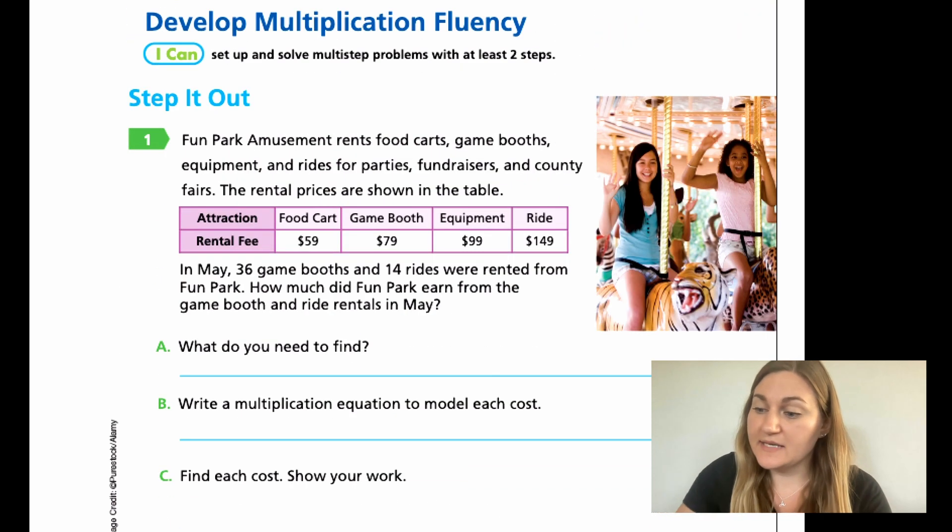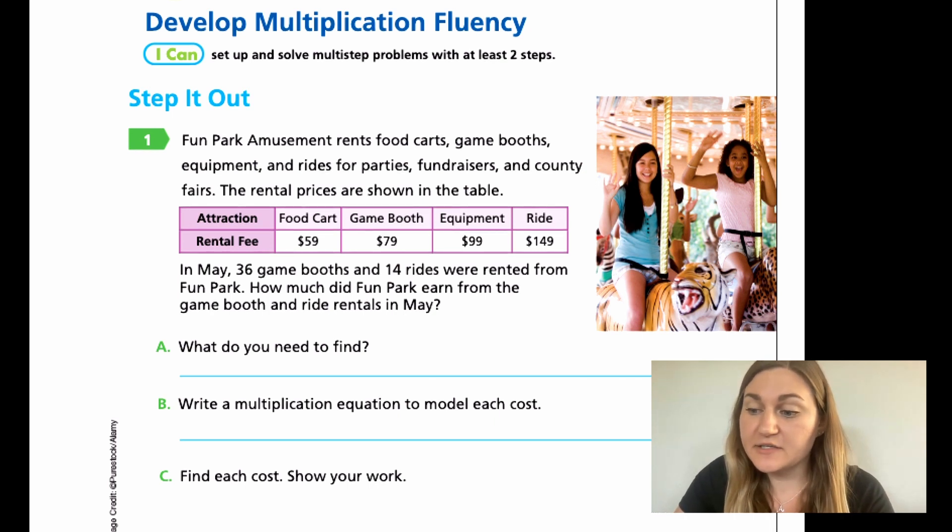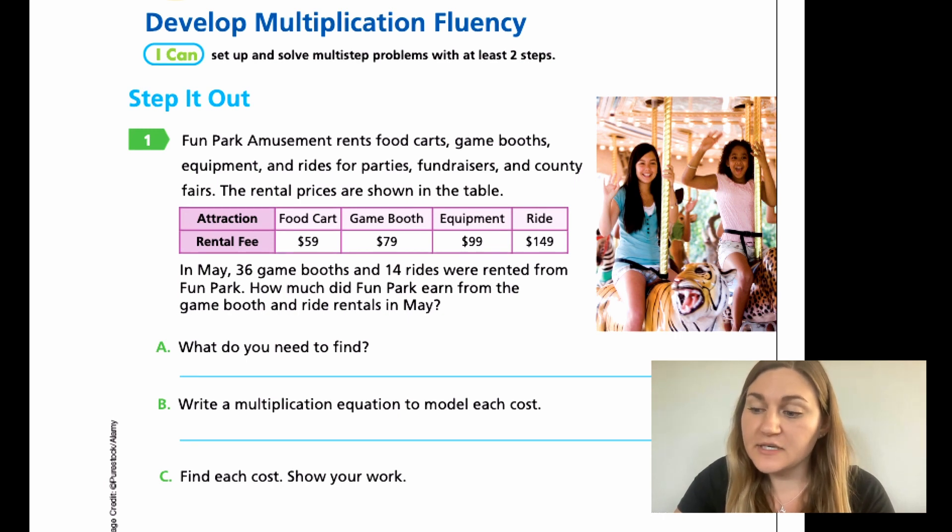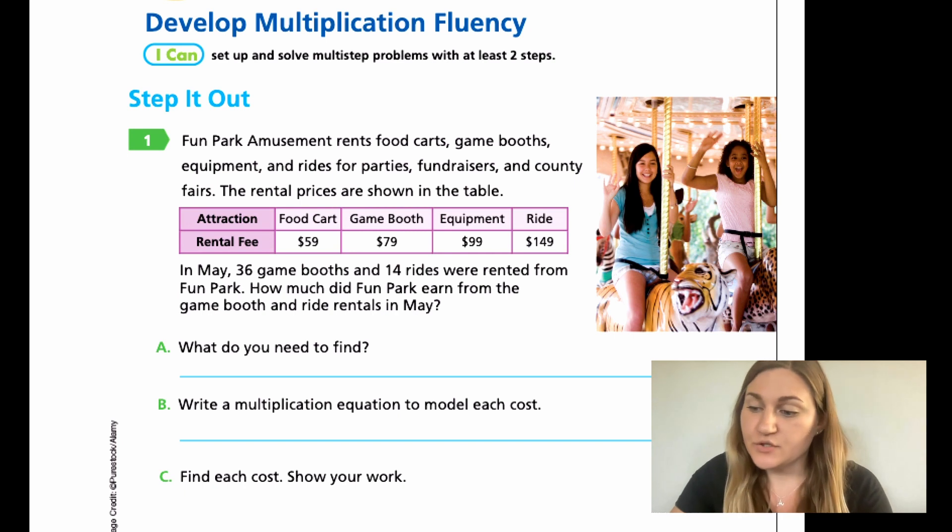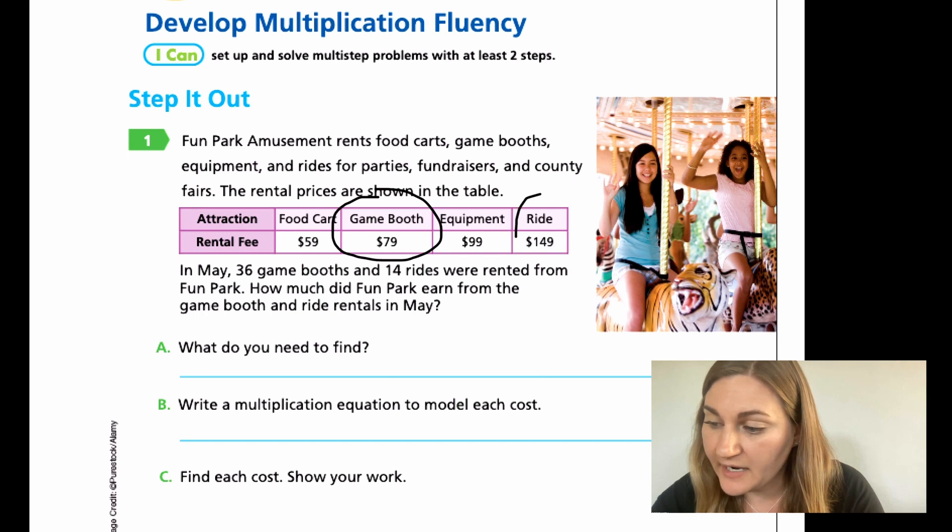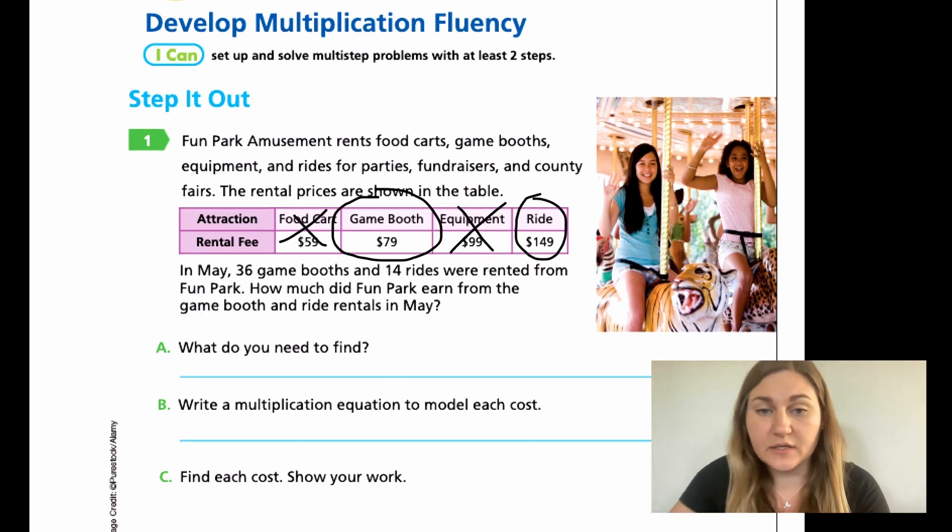Moving into lesson six, the step it out. There's a fun park amusement that rents food carts, game booths, equipment, and rides for parties, fundraisers, and county fairs. The rental prices are shown below. $59 for food carts, $79 for a game booth, $99 for equipment, and $149 for rides. In May, 36 game booths and 14 rides were rented for a fun park. So right now we're only looking at the game booths and the rides. This information isn't applicable to this problem.